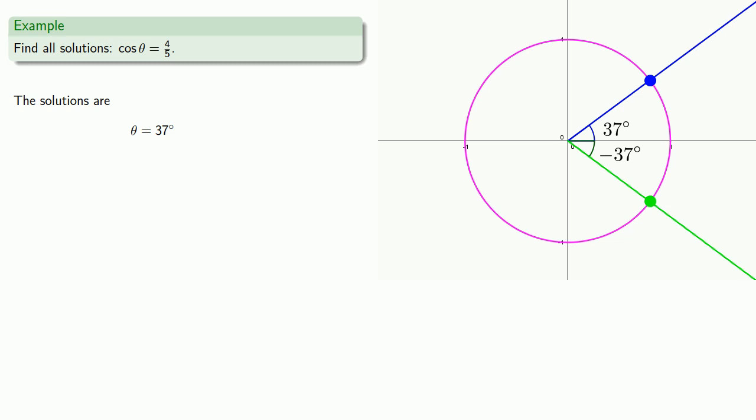Now, while there's nothing wrong with an angle of minus 37 degrees, it's preferable to express this without a negative angle. So one way of getting that is if we go once around from minus 37 degrees, we end at 323 degrees. And so this gives us a second solution.